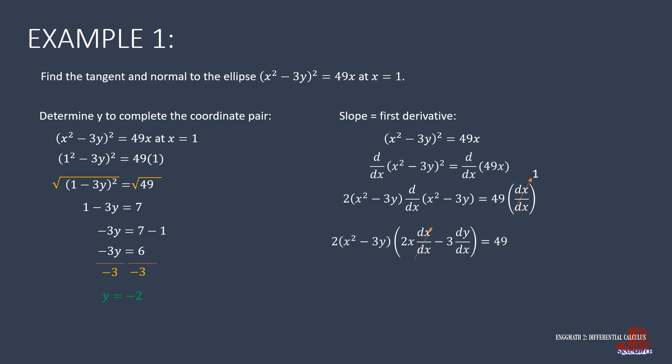Distributing d/dx to both x squared and negative 3y gives 2x times (dx/dx) minus 3 times (dy/dx). Since dx/dx is 1 and dy/dx is y prime, it is unnecessary to expand the left side. Instead, we simplify by moving other terms to the right, leaving 2x minus 3y prime on the left and 49 divided by twice of (x squared minus 3y) on the right.